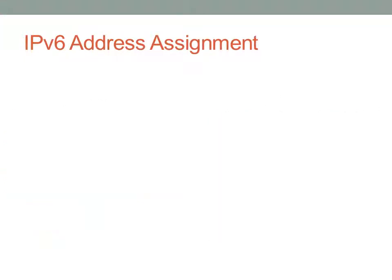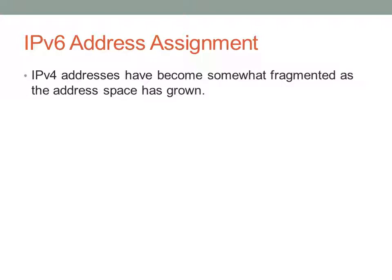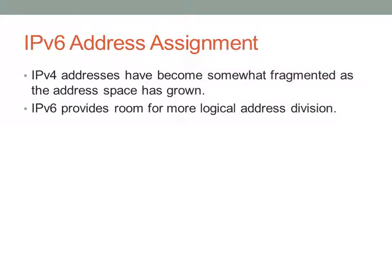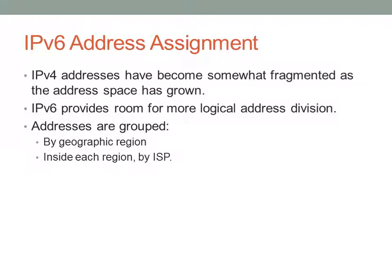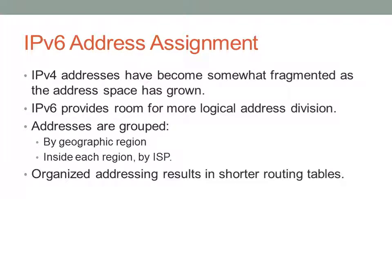IPv6 address assignment works as follows. IPv4 addresses have basically become fragmented, but with IPv6, since we have more space, we can more logically divide addresses into meaningful parts. Addresses are grouped by geographic region, and within each region there's a subgroup — kind of a subnet — assigned to each service provider. Within service providers, they can organize addresses based on geographic area, city block, or similar, and then assign them to each host. Because of this organized addressing, the routing table should be much shorter, resulting in a faster internet and faster lookup times.